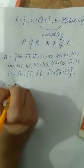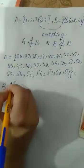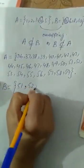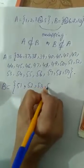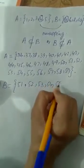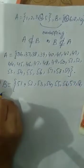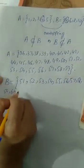Then set B, natural numbers between 50 and 80. It will start from 51, 52, 53, 54, 55, 56, 57, 58, 59, 60, 61.